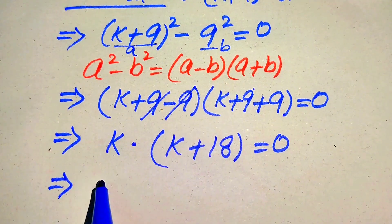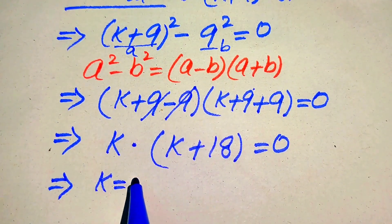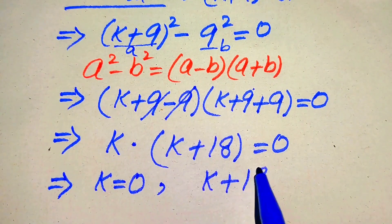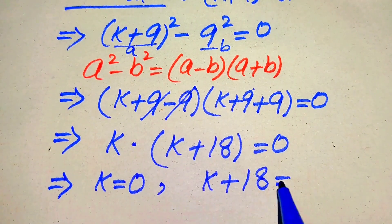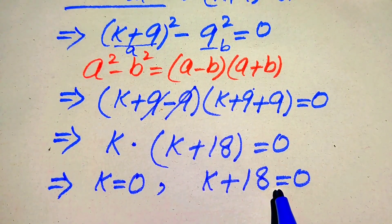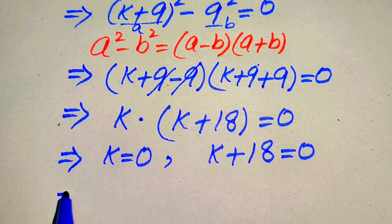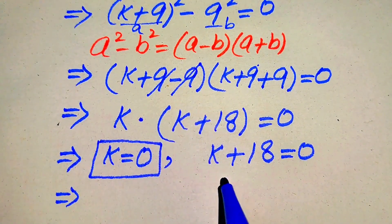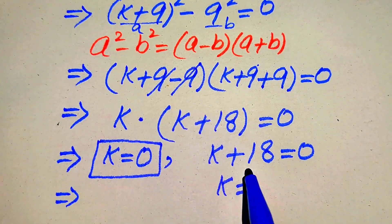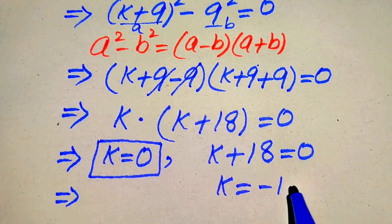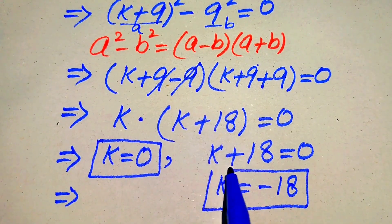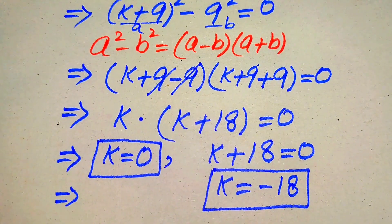We divide this equation into two cases. The first case gives k = 0, which is our first real root. The second case is k + 18 = 0, and moving +18 to the right hand side gives k = −18, which is the second root of the given equation.